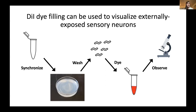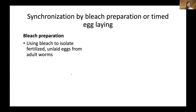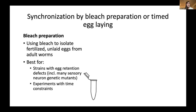For the synchronization step, bleach preparation can be used to isolate fertilized unlaid eggs from adult worms. As mentioned, watch out for over-bleaching and destroying the eggs. This method is best for strains with egg retention defects, including many sensory neuron genetic mutants. It's also ideal when you have time constraints, since bleach preparation can be completed in just a couple of minutes. The alternative method is timed egg laying, where you allow adults to lay eggs on plates for a set period of time to ensure a roughly synchronized population.